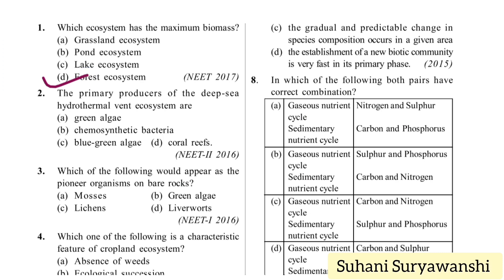The primary producers of the deep sea hydrothermal vent ecosystem are: green alga, chemosynthetic bacteria, blue-green alga, or coral reefs. The correct answer will be chemosynthetic bacteria.